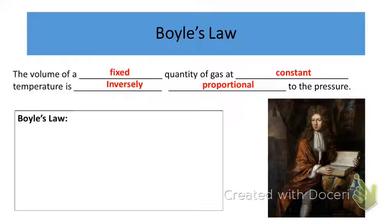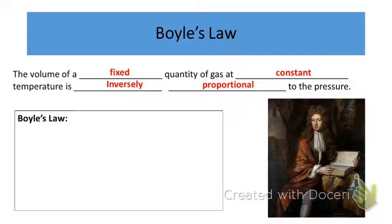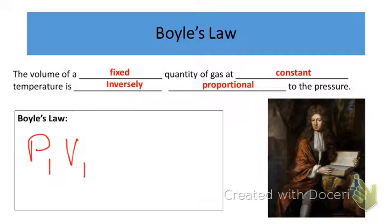Our first gas law is known as Boyle's Law. By definition, Boyle's Law shows us the relationship between the volume of a gas and its pressure. The volume of a fixed quantity of gas at constant temperature is inversely proportional to the pressure — simply put, pressure and volume are inversely related. Mathematically, Boyle's Law states that P1 times V1, where the 1 indicates the initial state of pressure and volume.